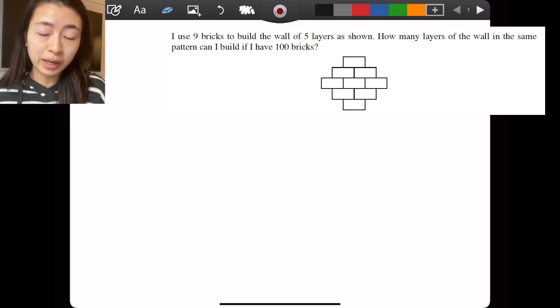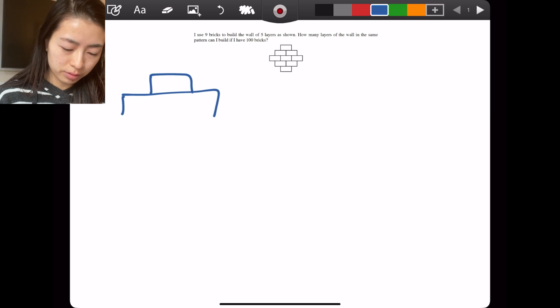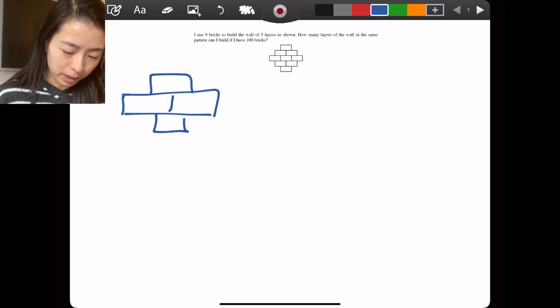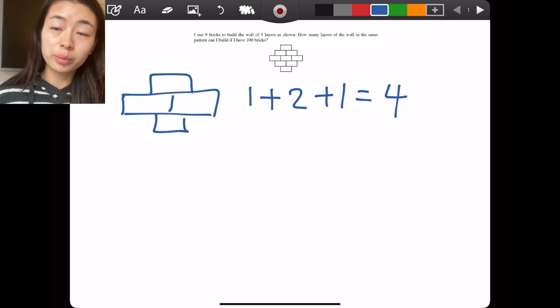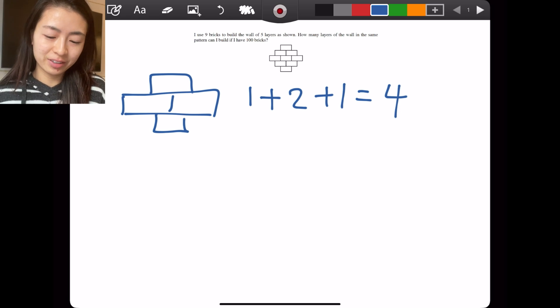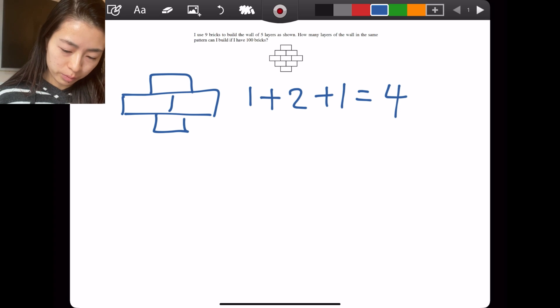Right here we have five layers, but what if we have three layers? Then we have 1 + 2 + 1 = 4 bricks. Let's try and find a pattern.